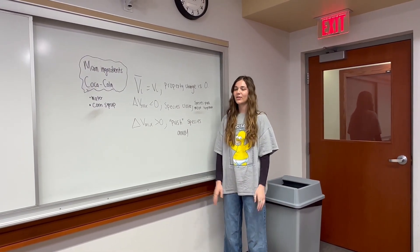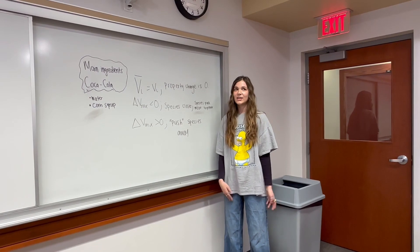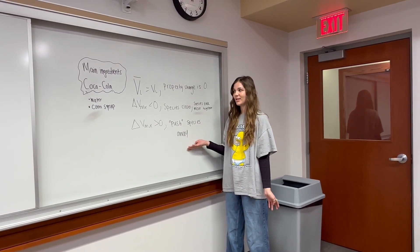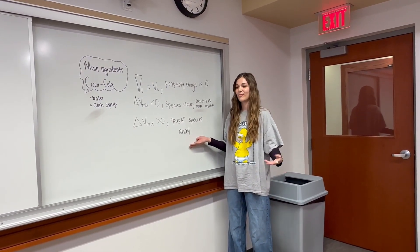Coca-Cola is comprised of mainly water and corn syrup, so you can see in three cases of delta v mix how they could interact, the intermolecular forces can interact.